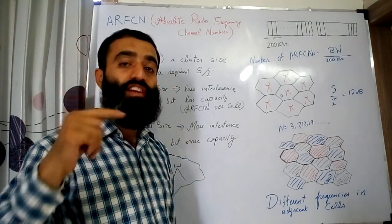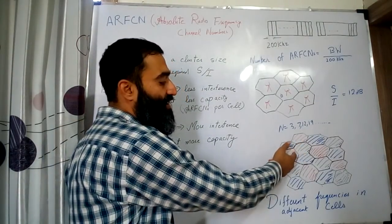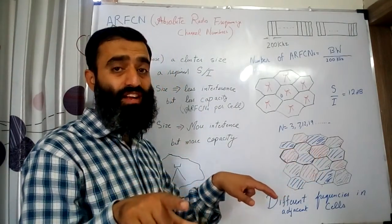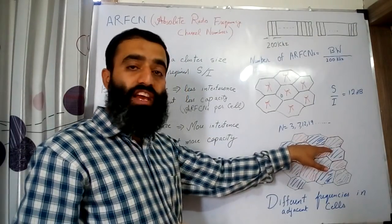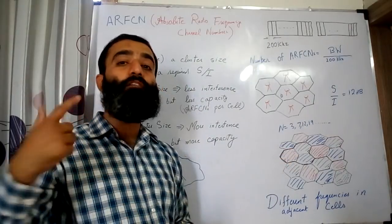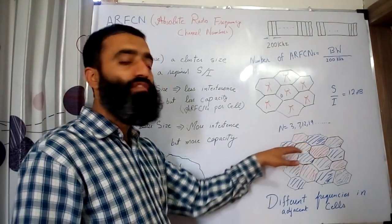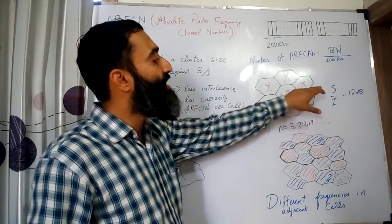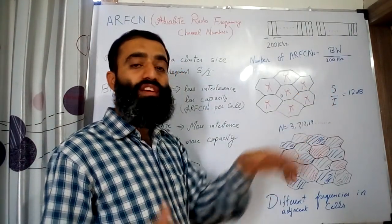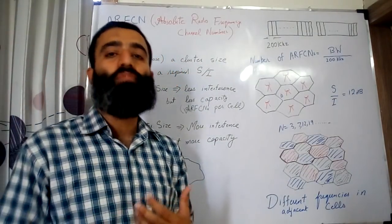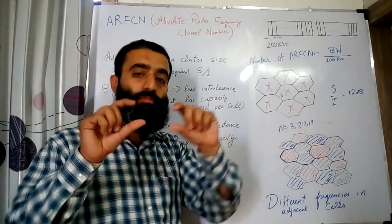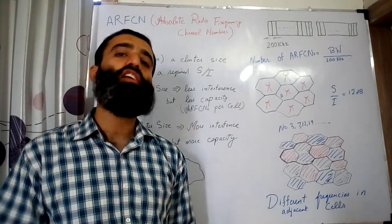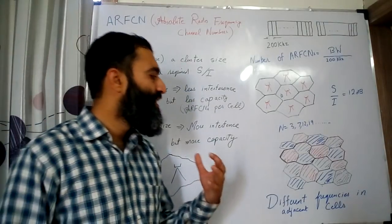The distance between cells using the same frequency has now increased. The interfering signals traveling from one co-channel cell to another must travel more distance, and over that distance their power is significantly attenuated. This means interference is reduced. With the same signal power, the signal-to-interference ratio increases, making it possible to achieve the minimum 12 dB signal-to-interference ratio requirement for error-free communication.